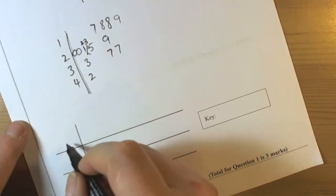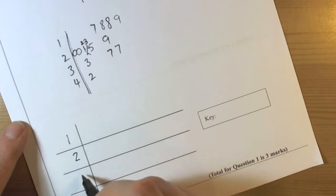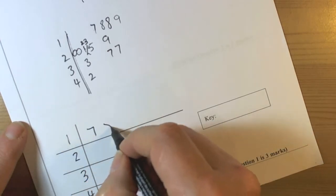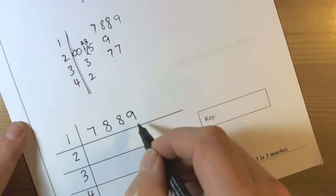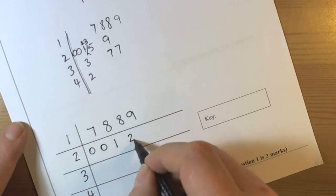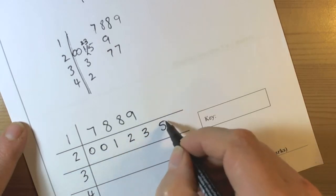So the final answer should be in ordered fashion. So we have 1, 2, 3, 4 and we had 7, 8, 8, and 9 in the first row. Then we had 0, 0, 0, 1, 2, 3, 5, 9.